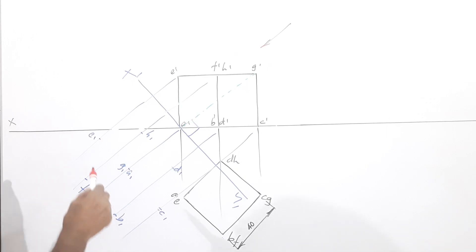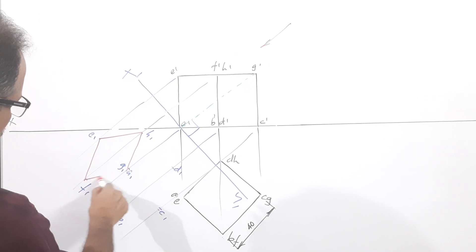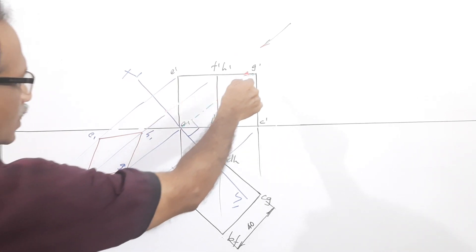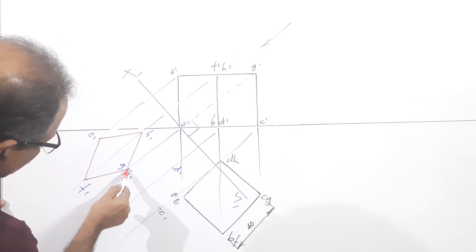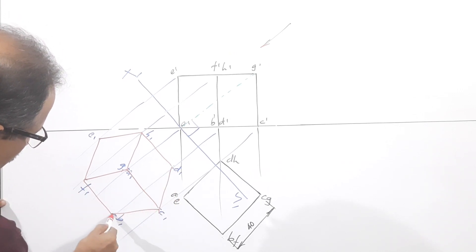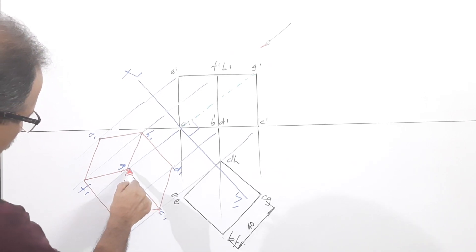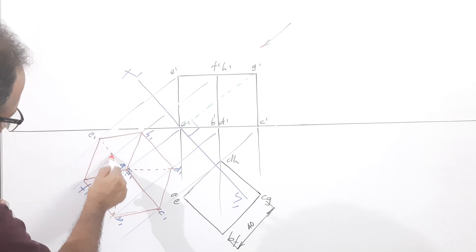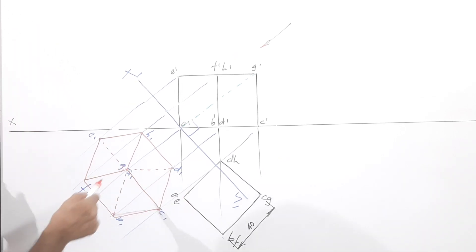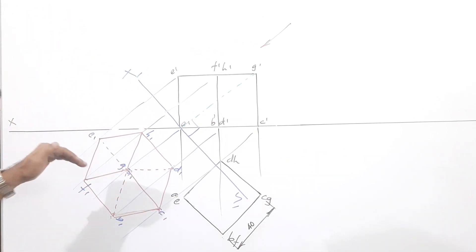You are looking in this direction. The top face e-f-g will be visible — make it firm. g-c will be visible. a1 and g1 coincide because a-g is the solid diagonal kept perpendicular to HP — vertical — so its plan will be a point. a1-g1 is a point. This is the auxiliary plan we have used — auxiliary projection method.